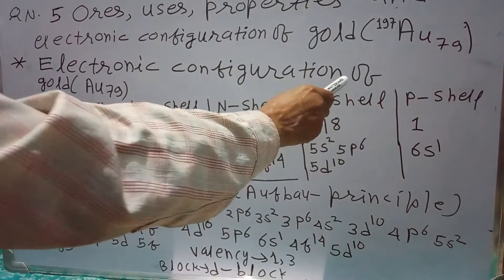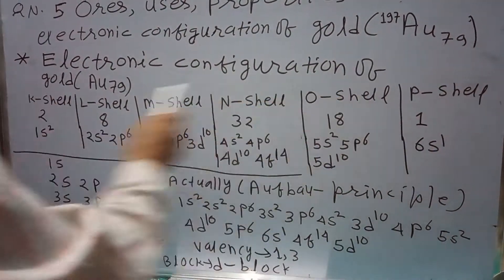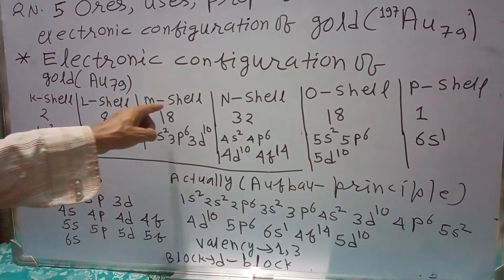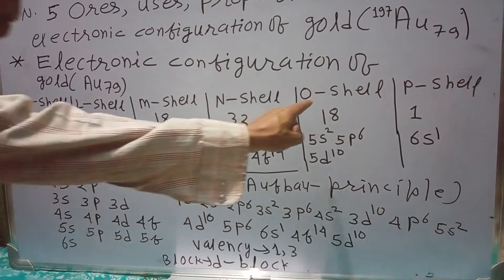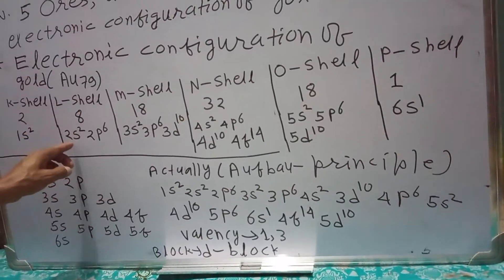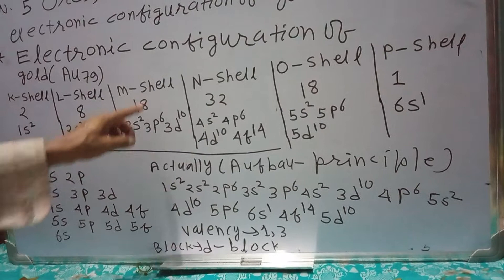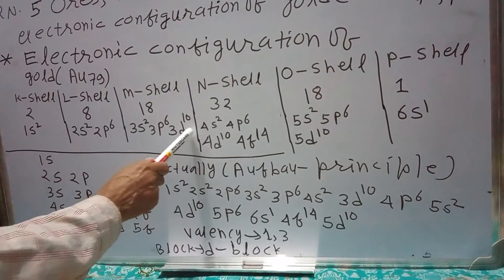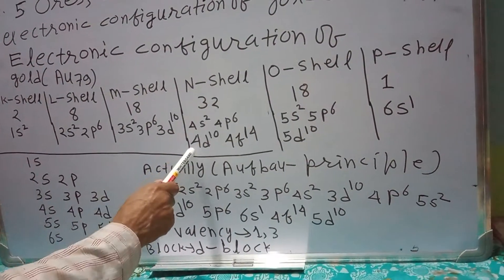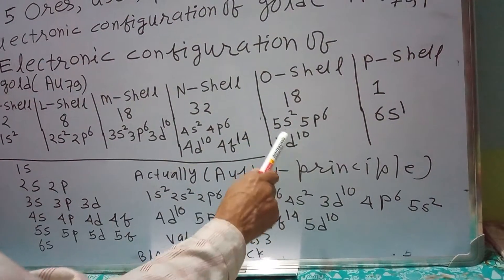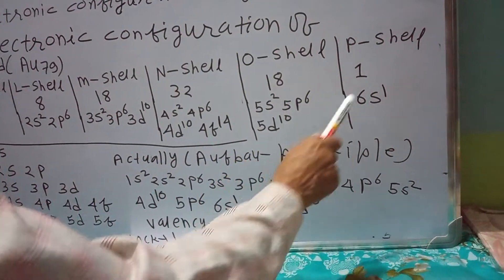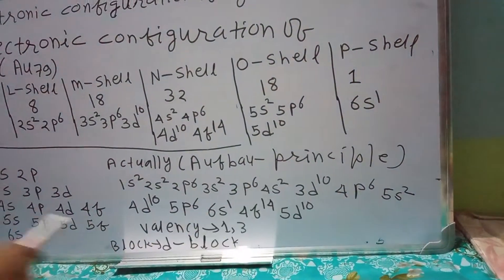Electronic configuration of gold Au 79: K shell 2, L shell 8, M shell 18, N shell 32, O shell 18, P shell 1. 1s² 8, 2s² 2p⁶ 18, 3s² 3p⁶ 3d¹⁰ 32, 4s² 4p⁶ 4d¹⁰ 4f¹⁴ 18, 5s² 5p⁶ 5d¹⁰, 6s¹ 4f¹⁴.